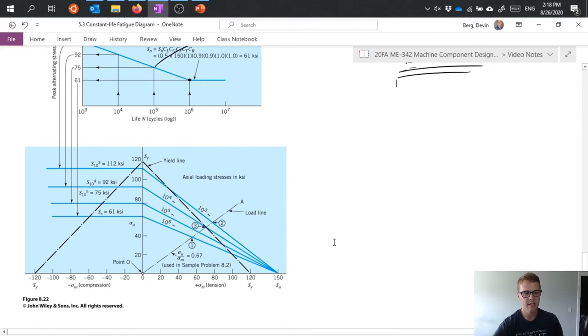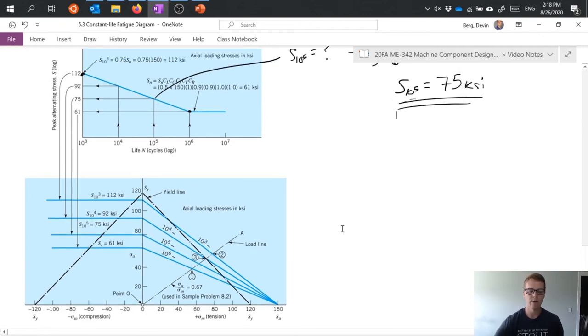The next step then is to take this data from my SN curve and move it to my constant life fatigue diagram. So just like in the example what we do is we take all of these data points and read them onto our chart and plot them, extending the lines from wherever they cross on the alternating axis down to where they cross the ultimate strength on the mean axis and that gives me the chart that I need. I add on my yield strength 120 and the lines connecting that onto my chart and I've constructed my Goodman diagram.